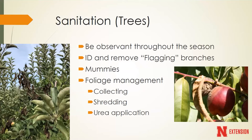Finally, foliage management - the leaves that drop harbor a lot of different diseases. Whether that's collecting and removing them or just mowing and shredding the leaves, shredded leaves are a lot smaller and tend to break down much more quickly. If you have severe issues with foliar leaf spots, you can apply urea to the ground once the leaves have dropped, then shred the leaves with a mower. The urea application plus shredding greatly increases the rate at which those leaves decompose. If we don't have leaves for the disease to live on, it's going to be much harder for that disease to cause infection next year.